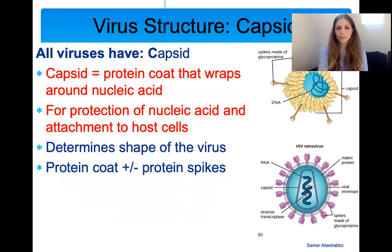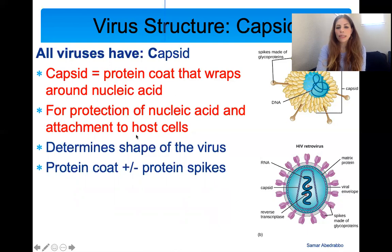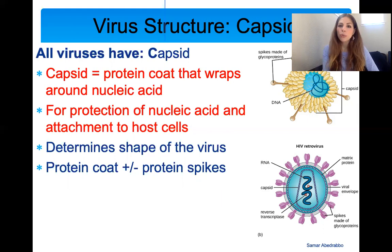All viruses also have a capsid outside the nucleic acid. It's made up of proteins — we call it a protein coat — and it's there to protect the very valuable nucleic acid of the virus. The capsid helps attach to host cells and determines the shape of the virus. Some capsids have protein spikes and some don't. Knowing the structure of these things is important if you want to create antiviral drugs or vaccines against viruses — you really want to understand their structure so you can create drugs that target it and potentially use these structures to create a vaccine.